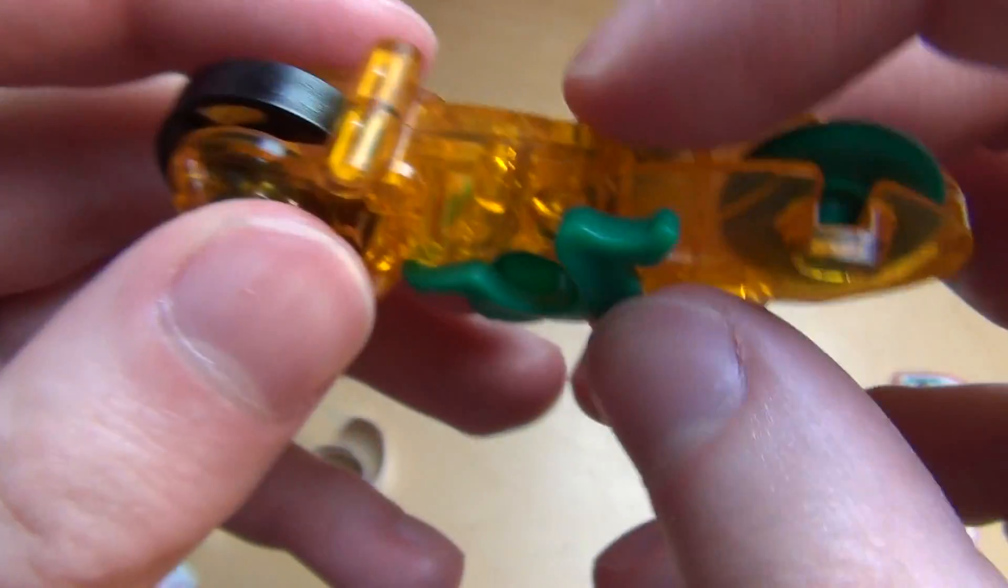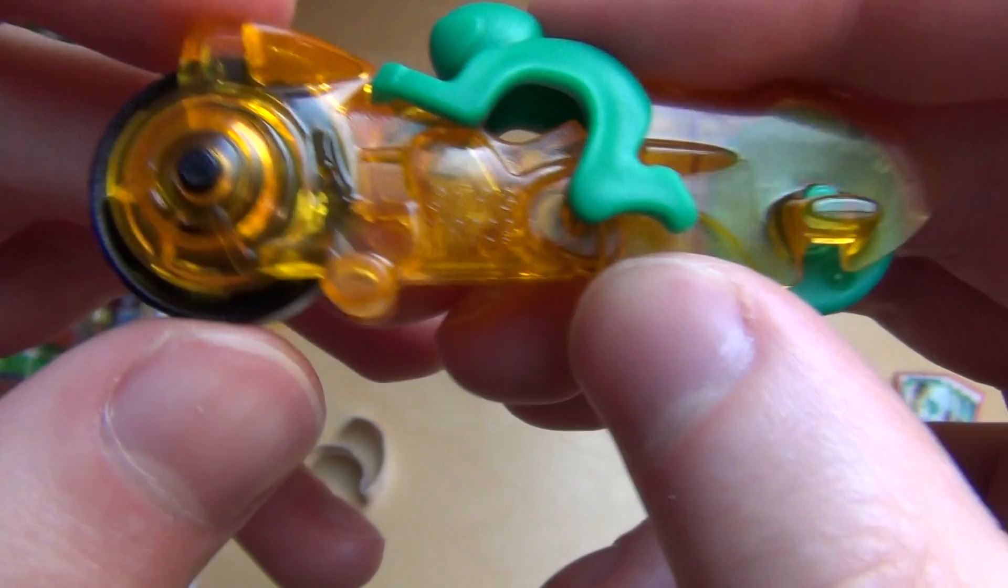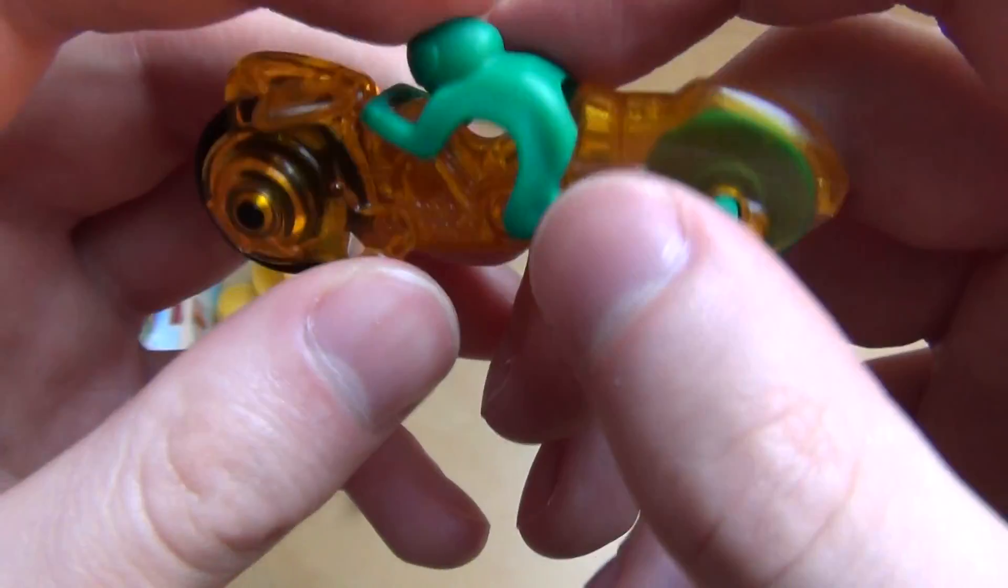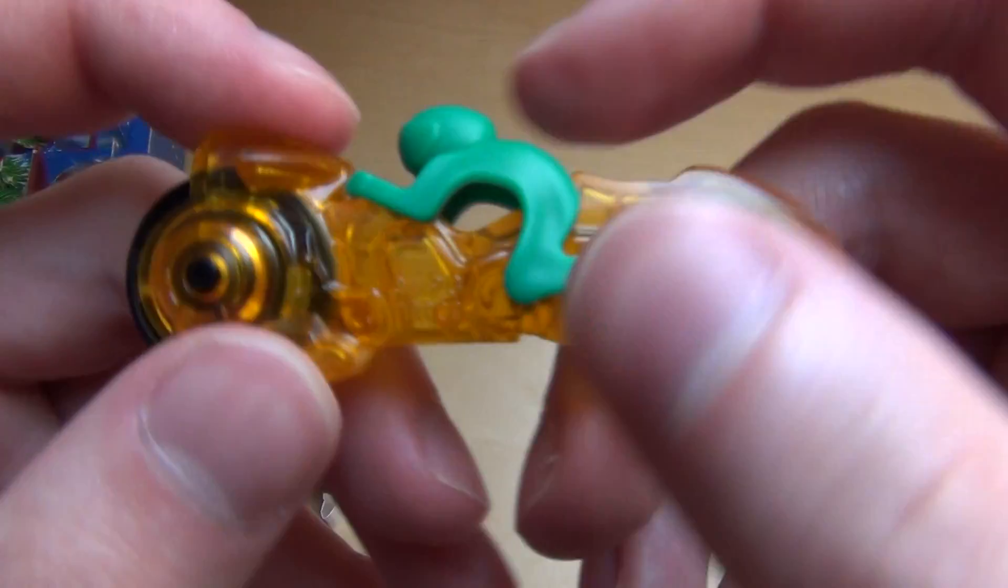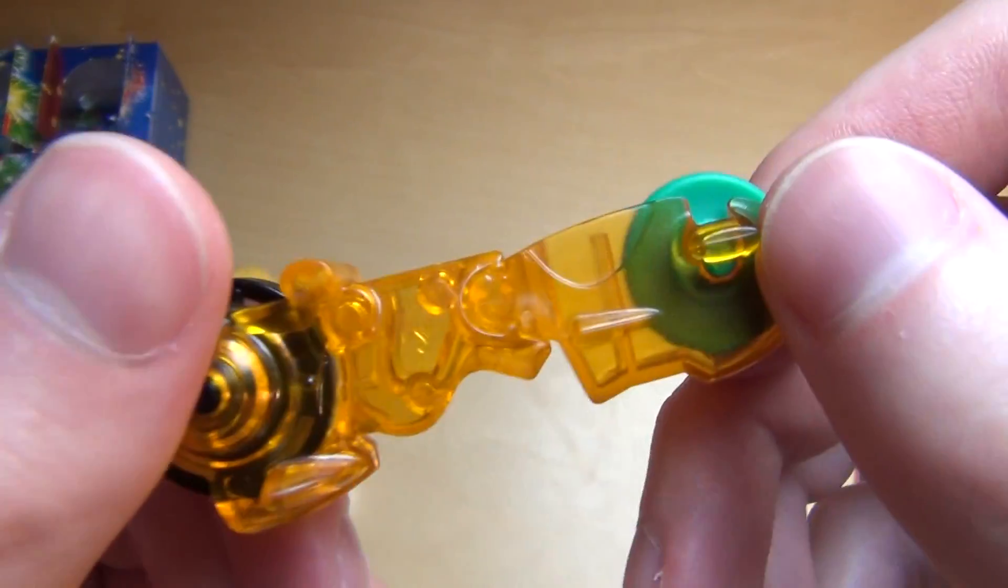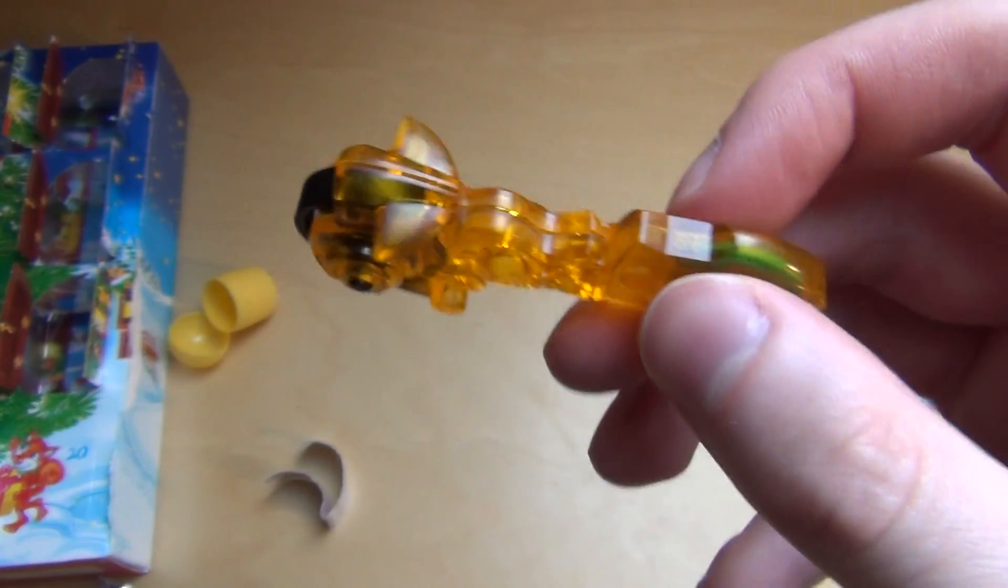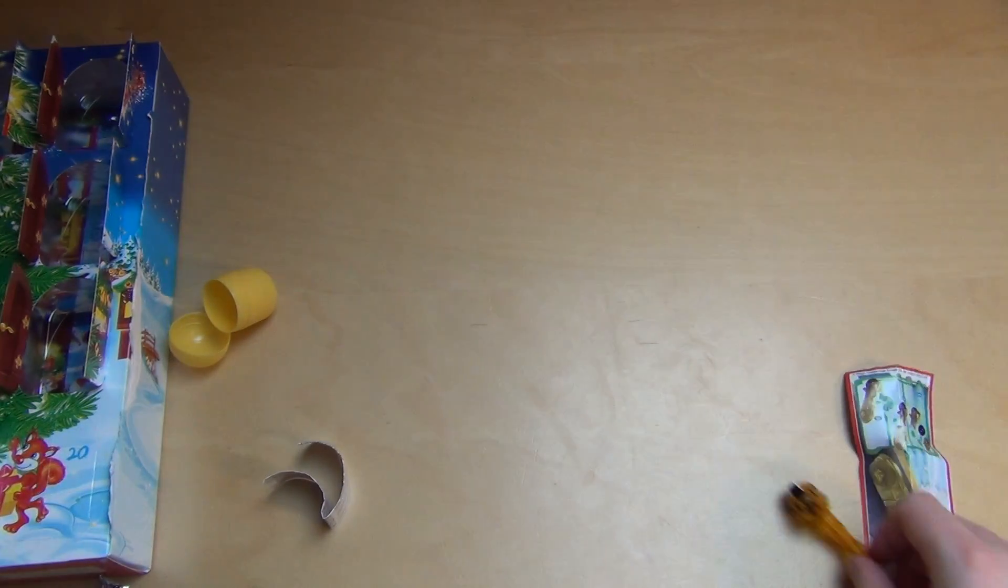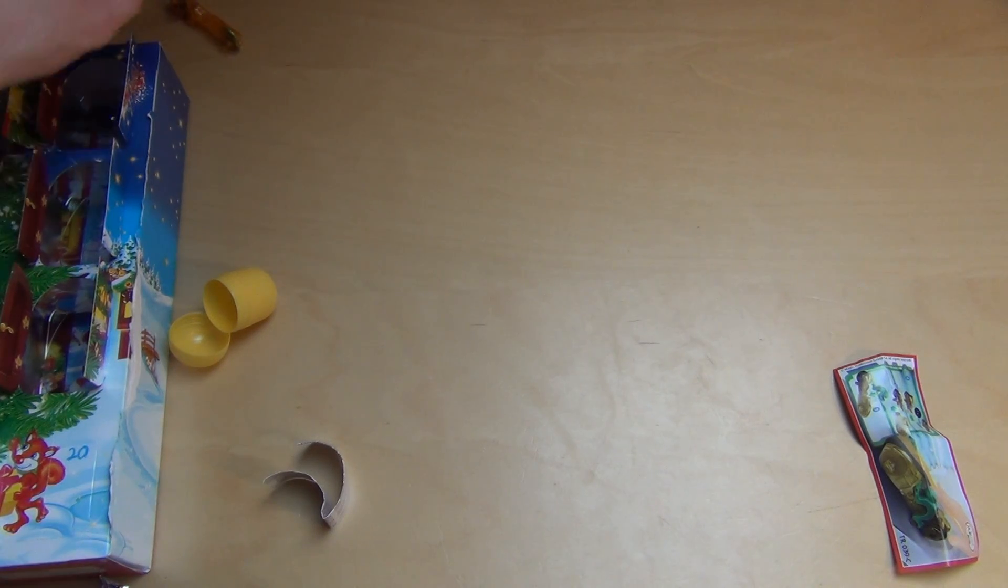I always remember that this is like a 65 cents item, this Kinder Surprise egg. Obviously the calendar is not expensive. But yeah, it's a very inexpensive toy. And it rolls. This is really cool.